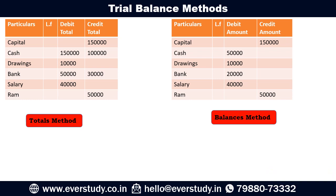If you follow the total method — for capital, the credit balance is 1,50,000, so that will be shown on the credit side in your total method trial balance. For cash, the debit was 1,50,000 and the credit amount was 1,00,000, so both are shown separately. Similarly, the debit balance is 10,000, bank shows 50,000 and 30,000 debit and credit respectively. The salary was 40,000 debit balance, and the personal account showed 50,000 credit amount — all shown as they are.